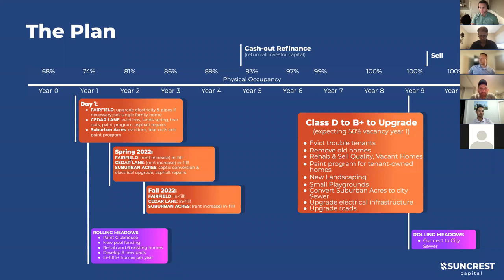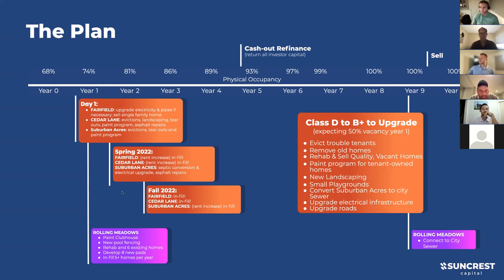We'll do rent increases for Fairfield and Cedar Lane in spring once we've completed the electric upgrades, asphalt repairs, landscaping, and paint program - only forecasting about a 10% increase, not dramatic. Part of that is because we want to upgrade the quality of the tenant base there as well. Within about 18 months, we'll have executed the business plan for the most part for turning around those communities, then focus on infill, bringing in brand new to five-year-old homes we can sell competitively against single family homes.